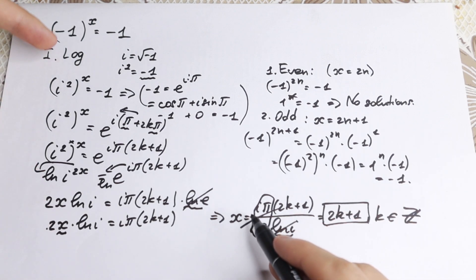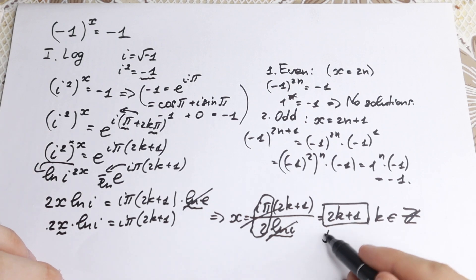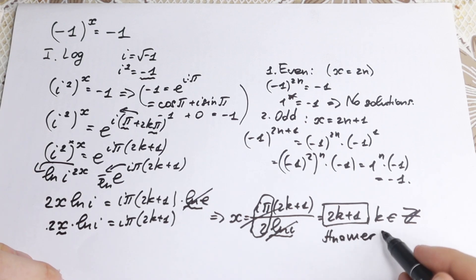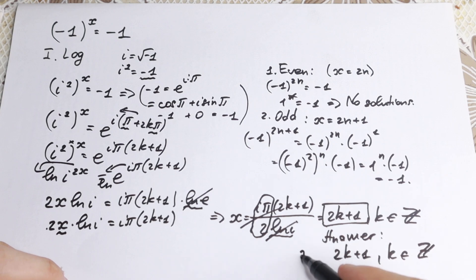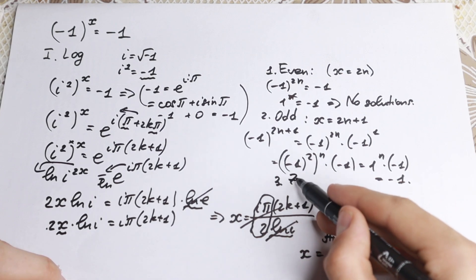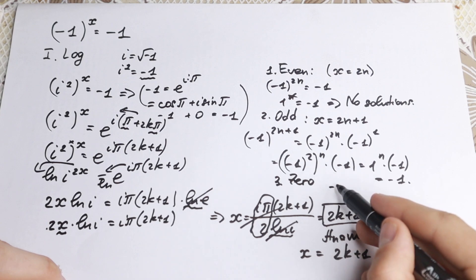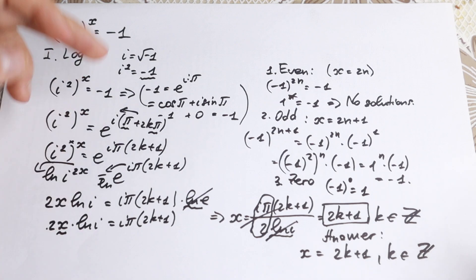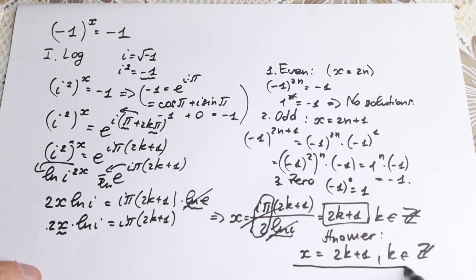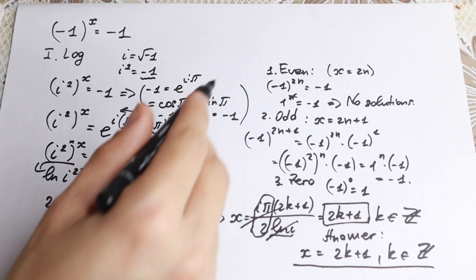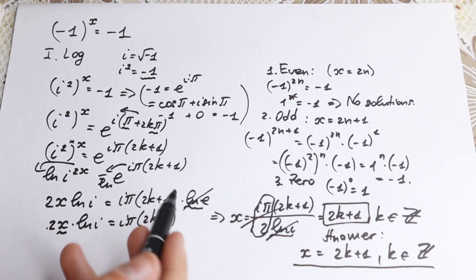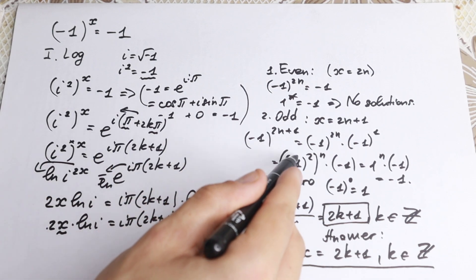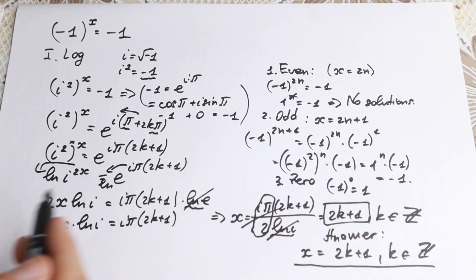Using the logarithm method with complex numbers, we proved that our answer is x equals 2k+1, where k is any integer. Some students may ask about x equal to zero: minus one to the power zero equals one, but in our problem we need minus one — so zero is not a solution. The answer comes from the complex number analysis, not just the simple observation.